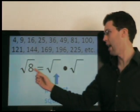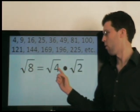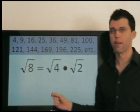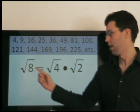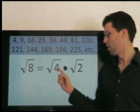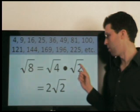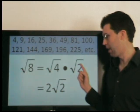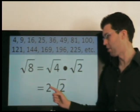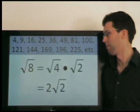Eight can be simplified as 4 times 2. Four is the largest perfect square factor of 8. Radical 4 equals 2. Radical 2 can't be simplified, so it stays radical 2. So our answer is 2 times radical 2.